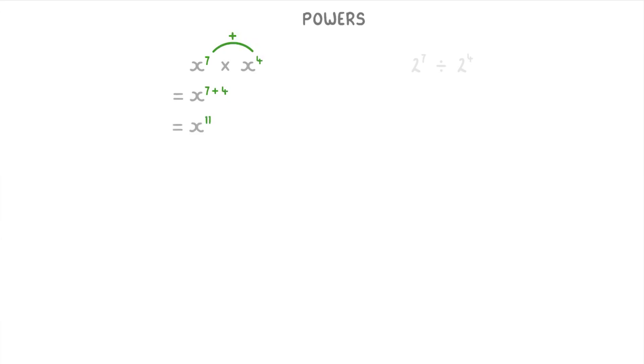Let's try a couple of questions now. In this first one, we're doing x to the power of seven times x to the power of four. Because we're multiplying, we need to add the powers. So x to the power of seven plus four, which is x to the power of 11. This next one, two to the power of seven divided by two to the power of four, is a bit different because the base is a number rather than a letter. But it works in exactly the same way. Because we're dividing, we have to subtract the powers. So two to the power of seven minus four, which is two to the power of three.